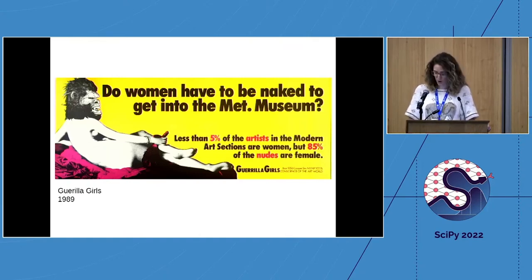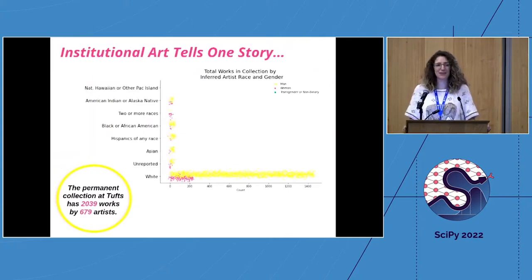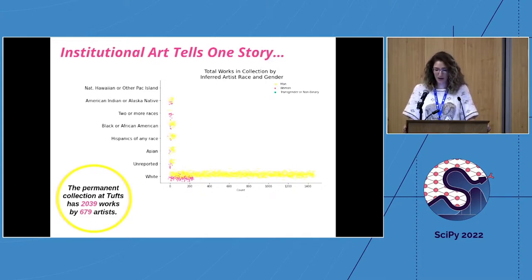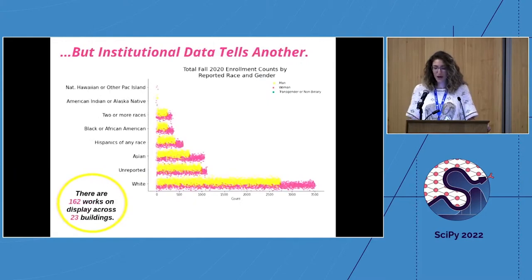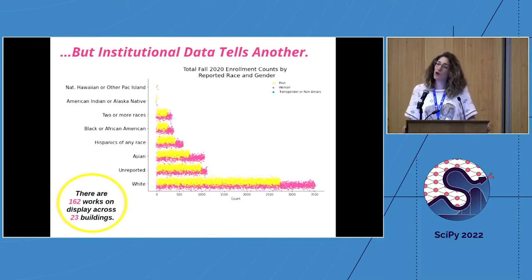This is a commentary on art in the Met Museum of Art — already poor representation — but the good news about a museum is you have a choice whether to go. A pertinent question is: what about public art, art hanging in public spaces or institutions where you do not have an option? I was looking at the Tufts University Art Gallery Collection and the institutional story told also has a white male problem. There are 2,000 works by over 600 artists, but enrollment data from 2021 shows a much more generous dispersion of students across racial and gender lines.